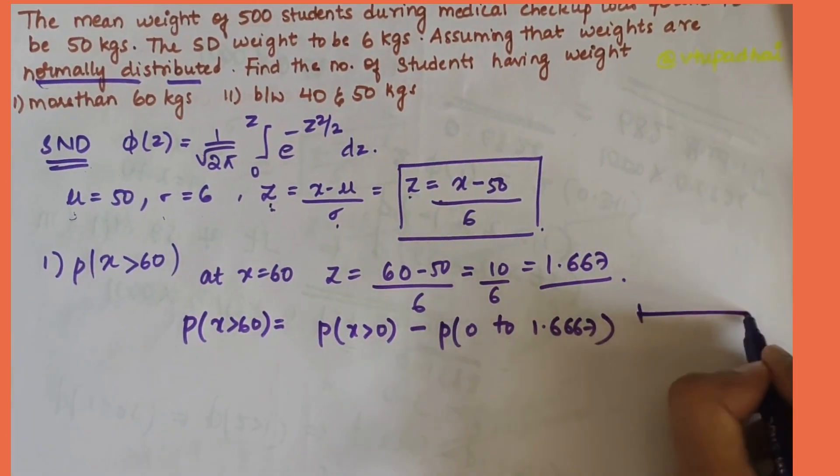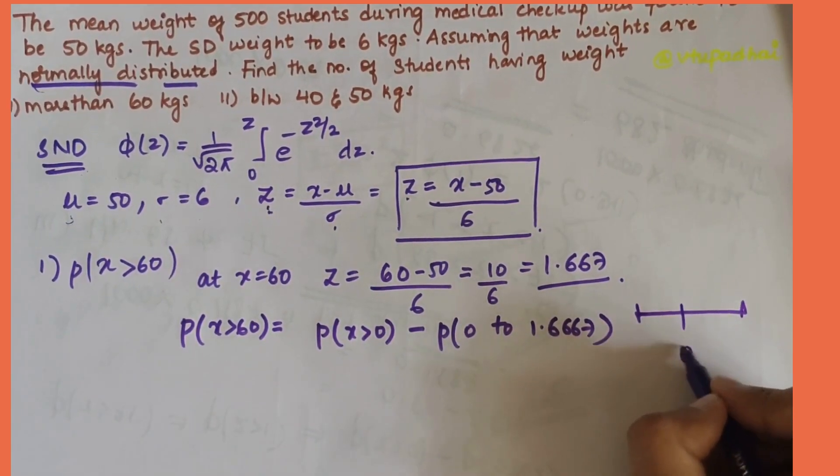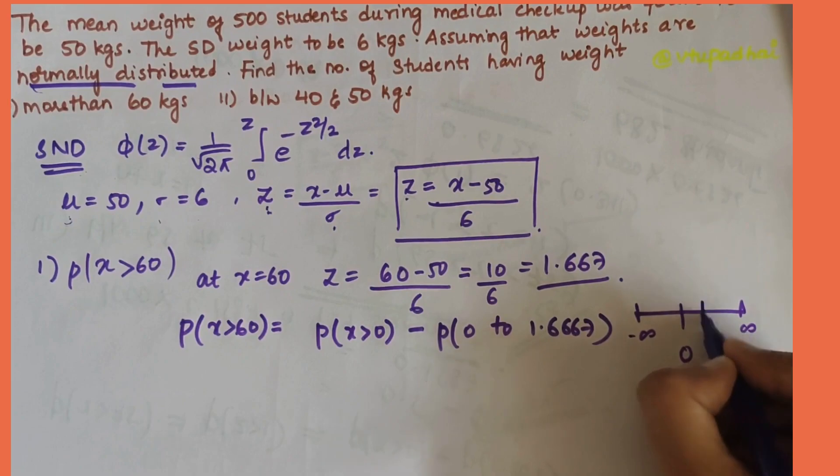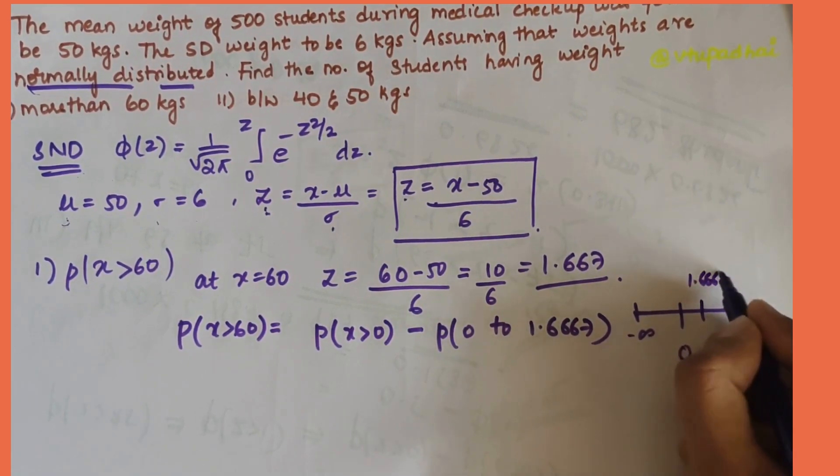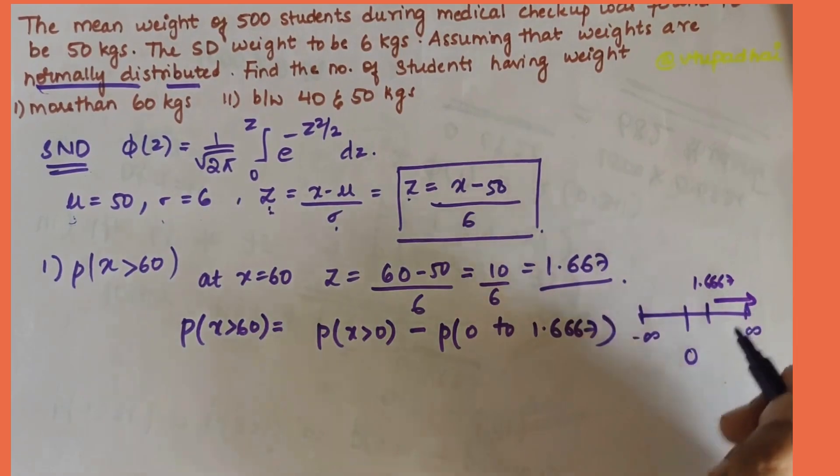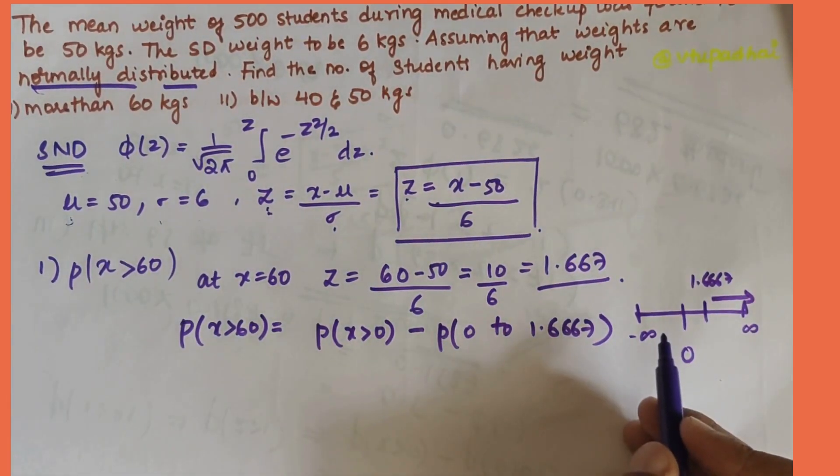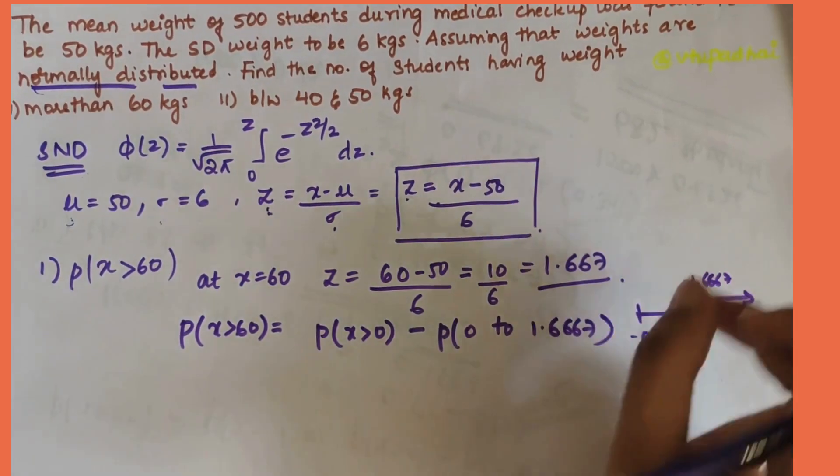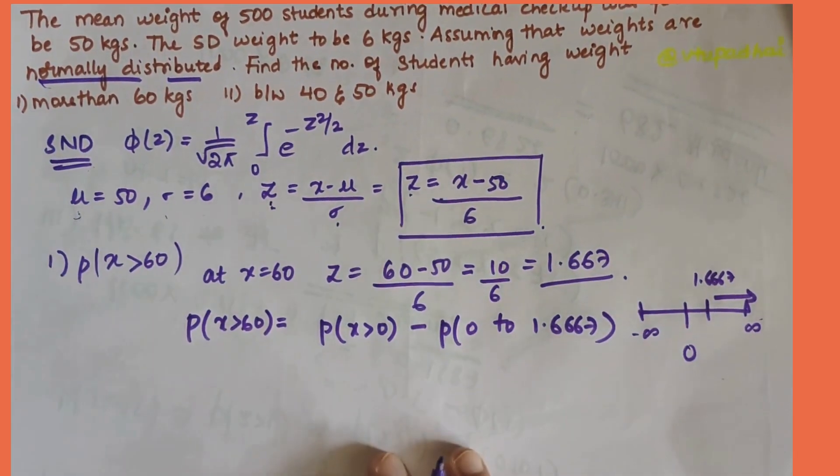Understanding this, let's take a number line: 0 here, minus infinity here, plus infinity. We have to find out from 1.6667 to the infinity. So you should minus it with 0, like this part minus this part would give you the answer. That's how we proceed.